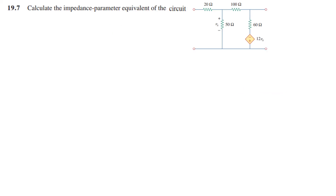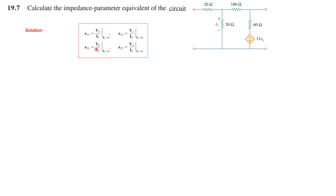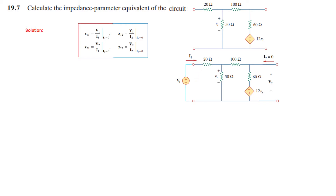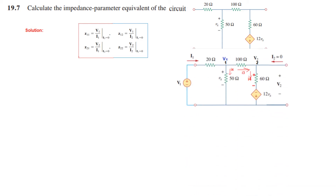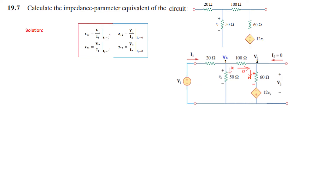In the question we have to calculate the impedance parameters for the given circuit. To find the first two parameters we have to put I2 equal to 0. This is I2 and this is I1. So we keep the right side open and connect a voltage source on the left-hand side. The circuit becomes something like this: we have connected a voltage source with current I1, left the other side open so I2 equals 0, and the end terminal voltage is V2.